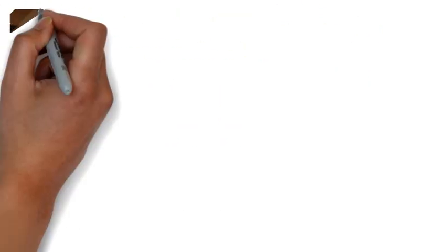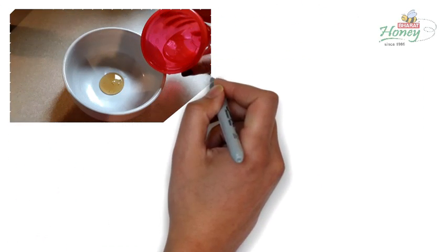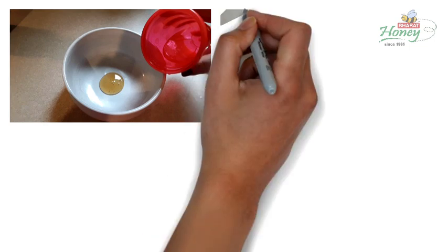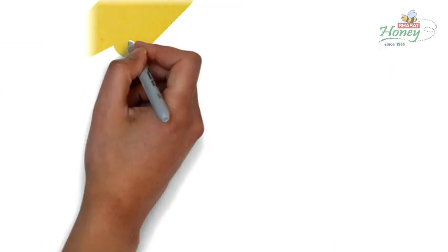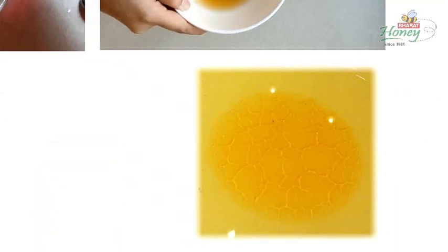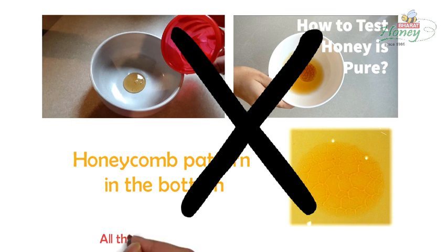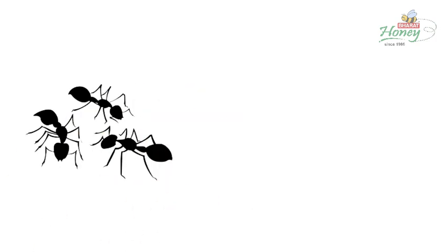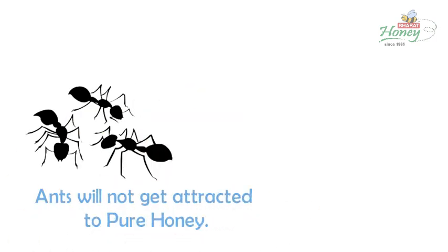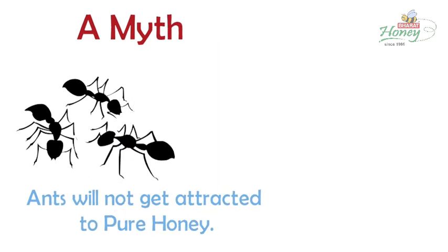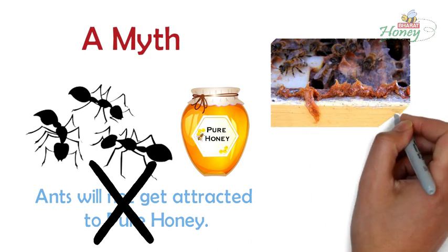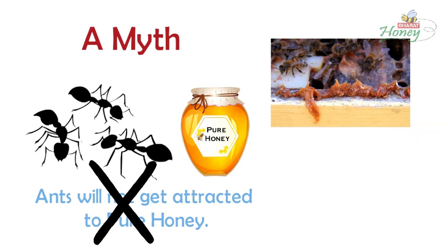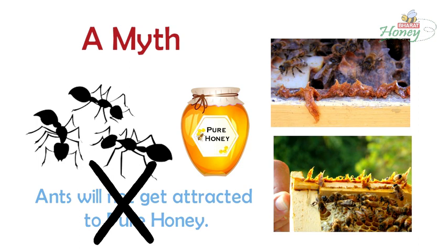Another test popular on the internet involves taking a little honey in an open-mouth container, adding water, and shaking it clockwise. The belief is that pure honey forms a hexagonal or honeycomb-like pattern at the bottom. This is a baseless and unscientific test because all thick adulterants behave the same way. There is also a myth that ants do not get attracted to pure honey — this is baseless, as honey bees actually form a sticky lining of propolis to protect their hive from ants and insects precisely because they are attracted to honey.